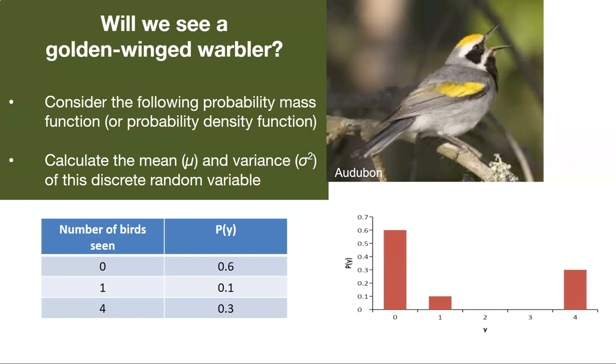Now what's the data? We went out a couple of times, we've got some long-term data historically. And what we've got is a probability distribution function. So we go out, the probability that we see zero birds is 0.6. So that's actually quite likely. It is most likely that we'll go out and we won't find any golden-winged warblers. The probability that we find one warbler is 0.1, and the probability that we find four warblers is 0.3.